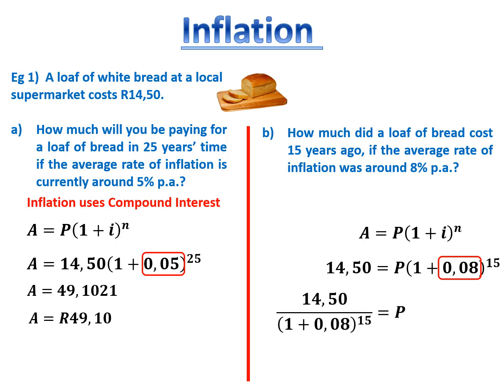We divide by the bracket to the power of 15. If you enter that into your calculator, you will get an answer of 4.57, rounded off to two decimal places. So 15 years ago, a loaf of bread would have cost you about R4.57.